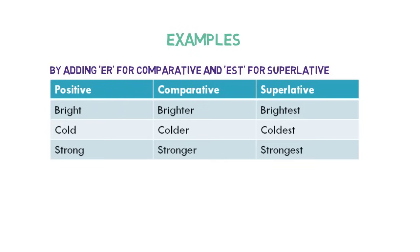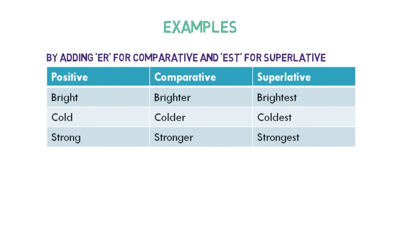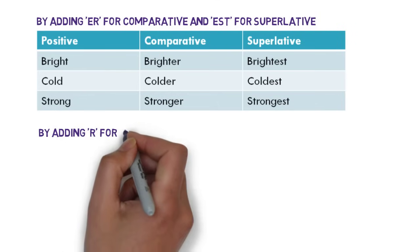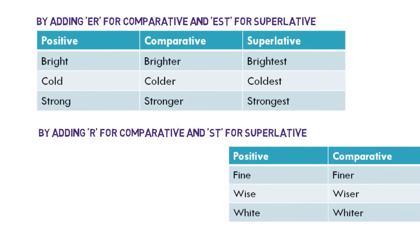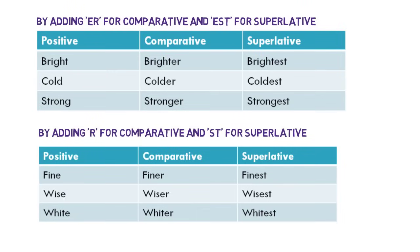Another way of changing degrees is also by adding R and ST at the end when the word already ends in E. For example: Fine, Finer, Finest — Wise, Wiser, Wisest — White, Whiter, Whitest. Note the ER and EST characters at the end of the comparative and superlative degrees in these examples as well.